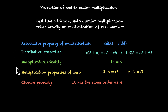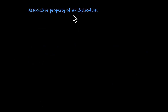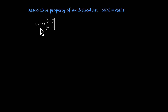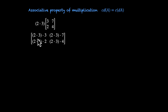Now let's look at these properties and see why they work. Associative property of multiplication says CD times A equals C times DA. Let's take an example with two real numbers, 2 and 3. Multiply them and then multiply the product with the matrix [3, 7, 2, 4]. So if you multiply this product with this matrix, we get 2 times 3 times 3, then 2 times 3 times 7, 2 times 3 times 2, and 2 times 3 times 4. So you are multiplying 2 times 3 with all of these elements.